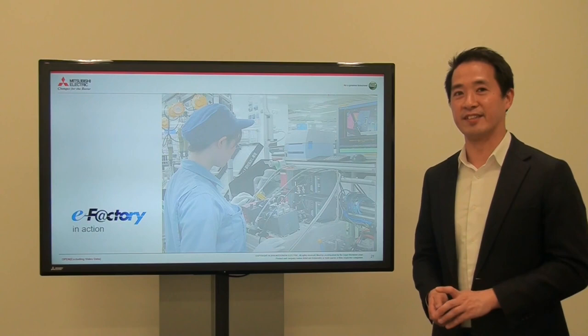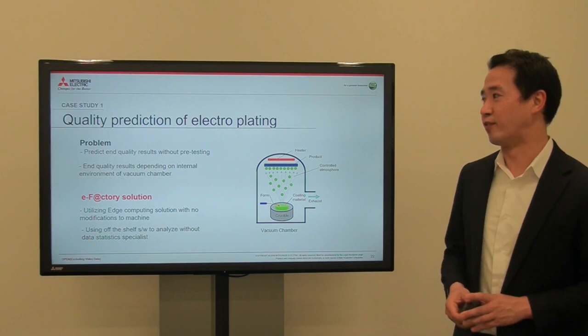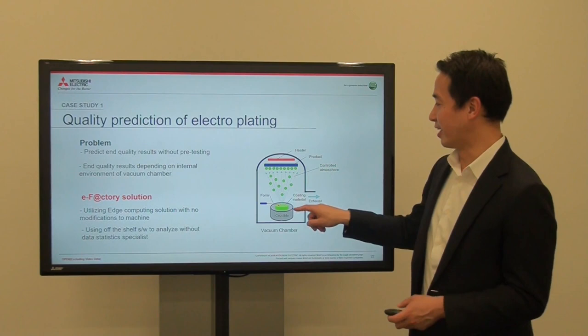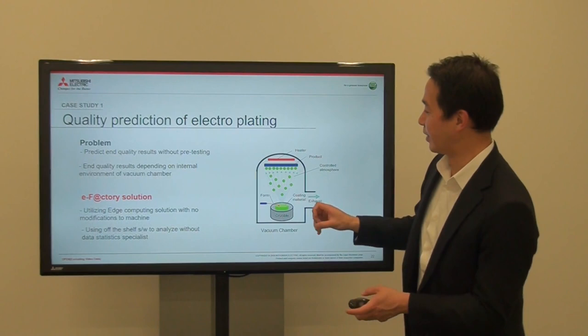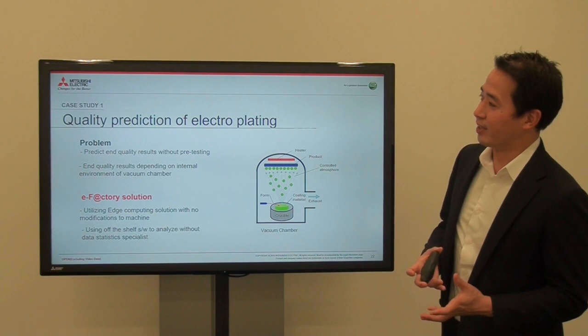Next, I would like to go through an actual use case of data analytics in manufacturing. This is an example that happened in an electronic plant. It's actually coating an electronic chip — there's a vacuum chamber, the final chip is on the top, the coating material is at the bottom. A beam melts the coating material, and because it's a vacuum chamber, the material floats up and sticks to the product, which is then coated.